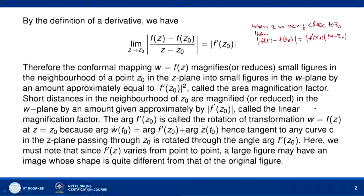Since |f(z) - f(z0)| = |f'(z0)| · |z - z0|, the length will be magnified or reduced by the factor |f'(z0)|. Here |f(z) - f(z0)| is the length between f(z) and f(z0), and |z - z0| is the length between z and z0. So lengths in the z-plane are magnified or reduced in the w-plane by |f'(z0)|, and areas are magnified or reduced by approximately |f'(z0)|².